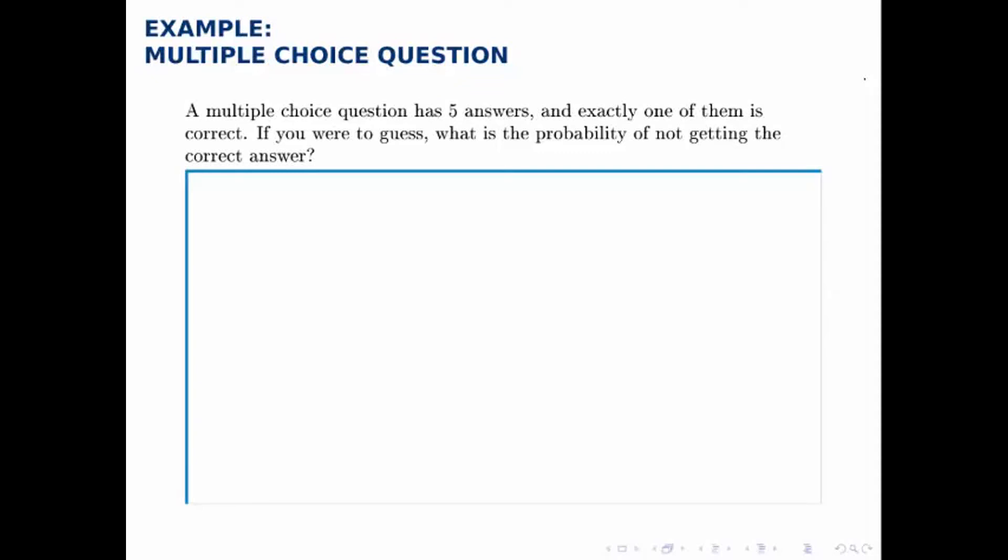A multiple choice question has five answers and exactly one of them is correct. If you were to guess randomly, what's the probability of not getting the correct answer?